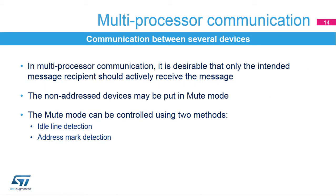To simplify communication between multiple processors, the LPUART supports a special multiprocessor mode. In multiprocessor communication, it is desirable that only the intended message recipient should actively receive the message. Non-addressed devices may be put in mute mode using two methods: idle line or address mark detection. The LPUART can enter or exit from mute mode using idle line detection or address mark detection.